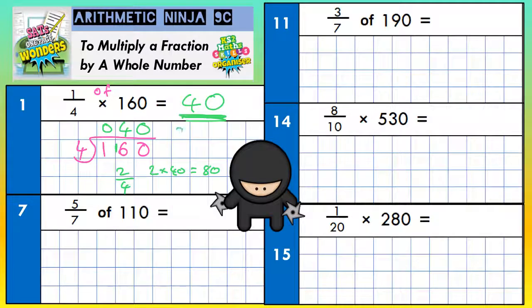So whatever your answer is, you've then got to times it by the number on the top. And in this case, it was 1. So 40 times 1 is still 40, which is why our answer for that one is still 40.